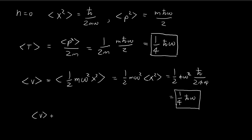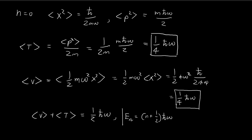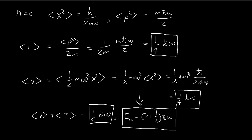Adding the two terms together gives us the total energy, which is ½ ℏω. Checking against the formula for the energy of the nth stationary state — E_n = (n + ½) ℏω — for n equal to 0, our total energy matches perfectly with what we expect from this formula.